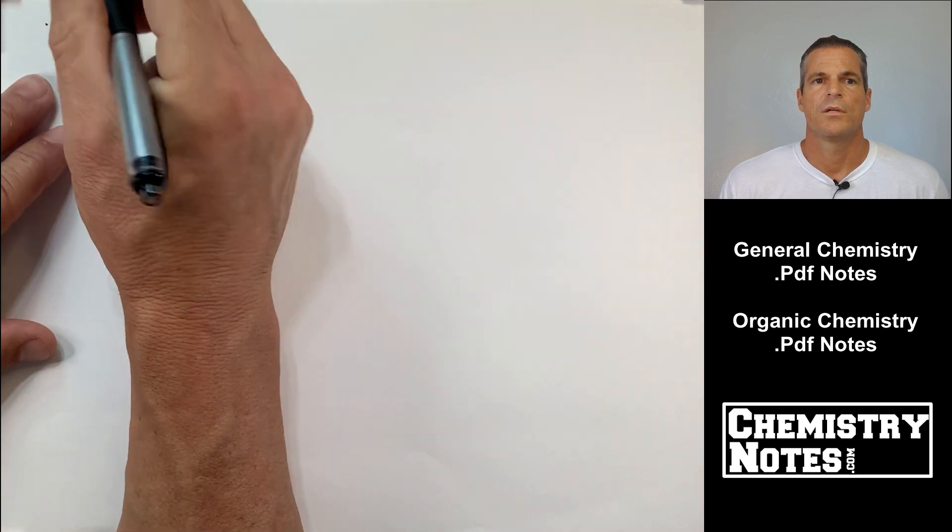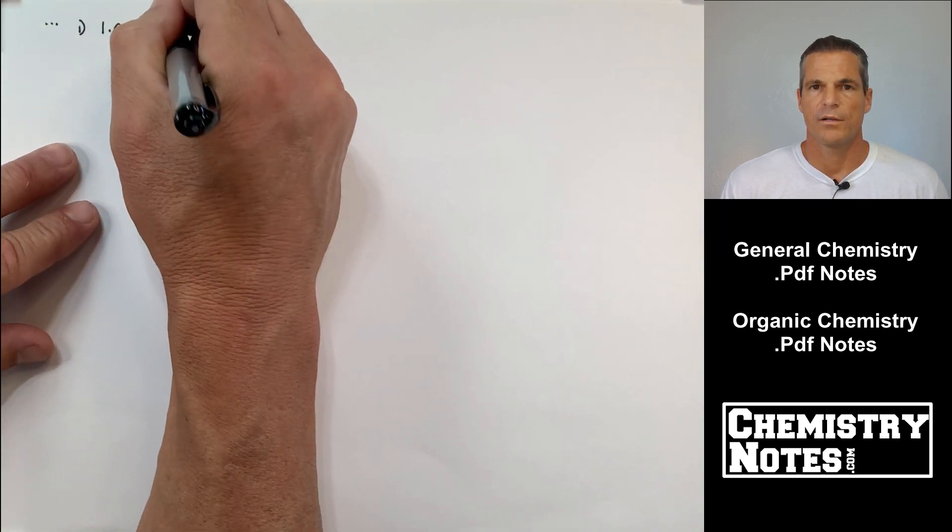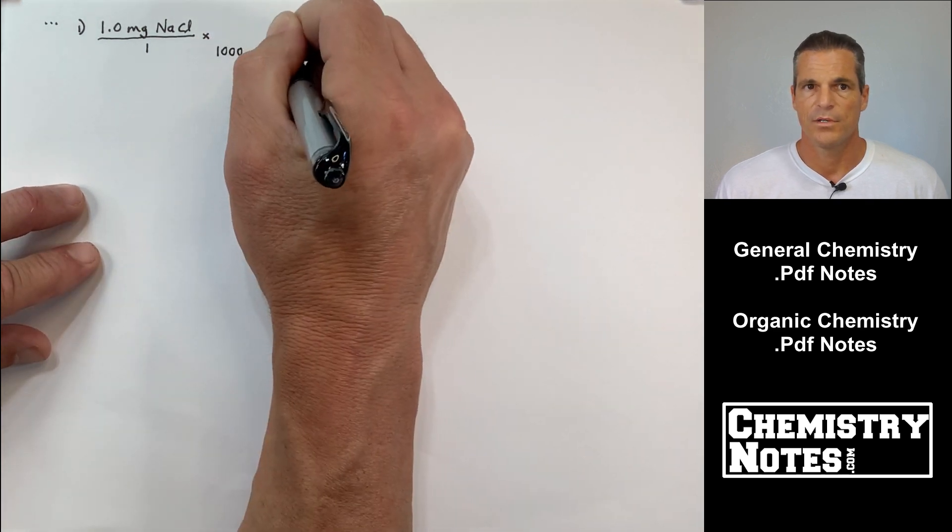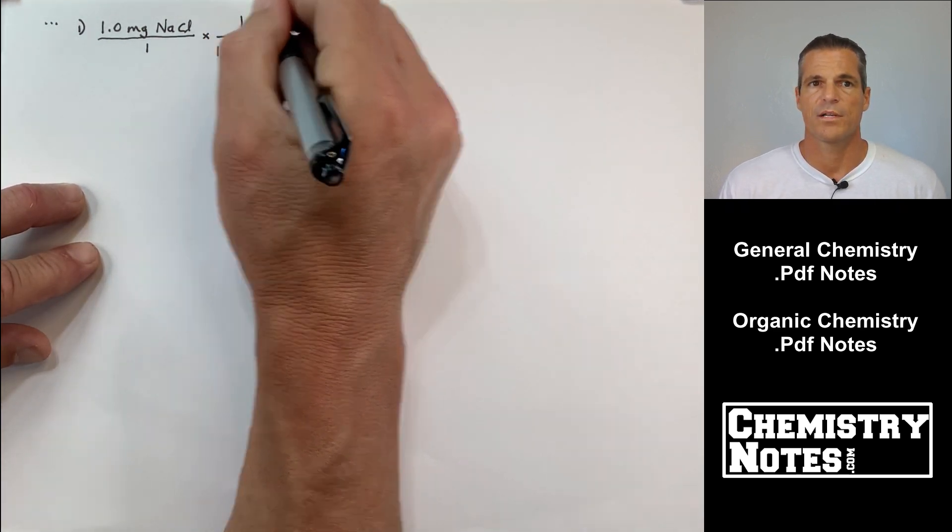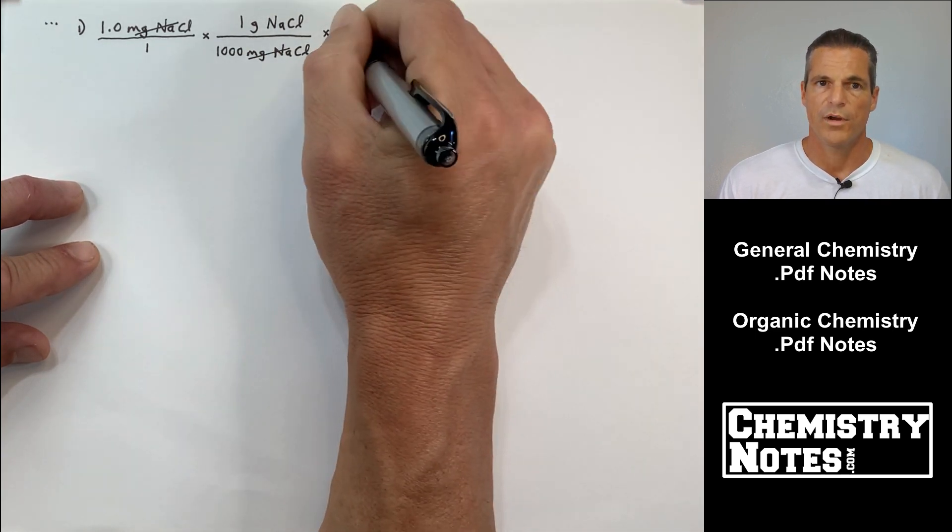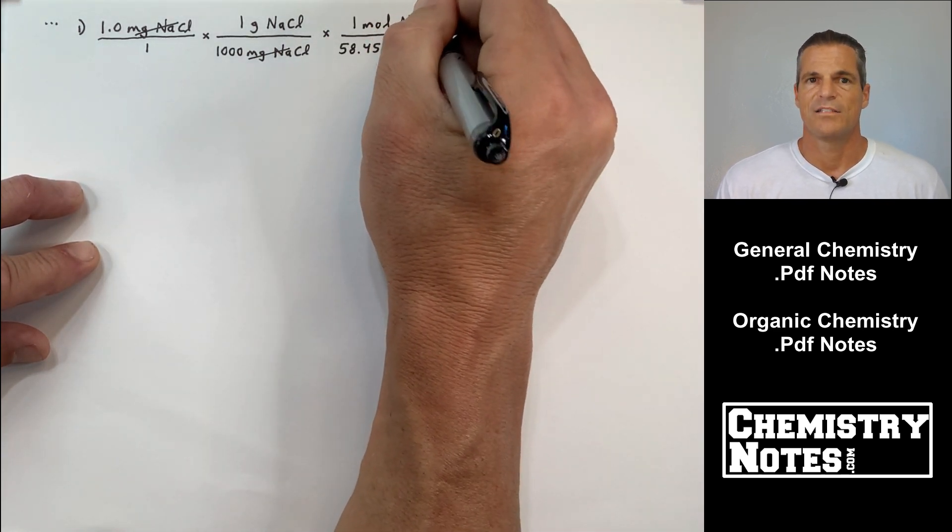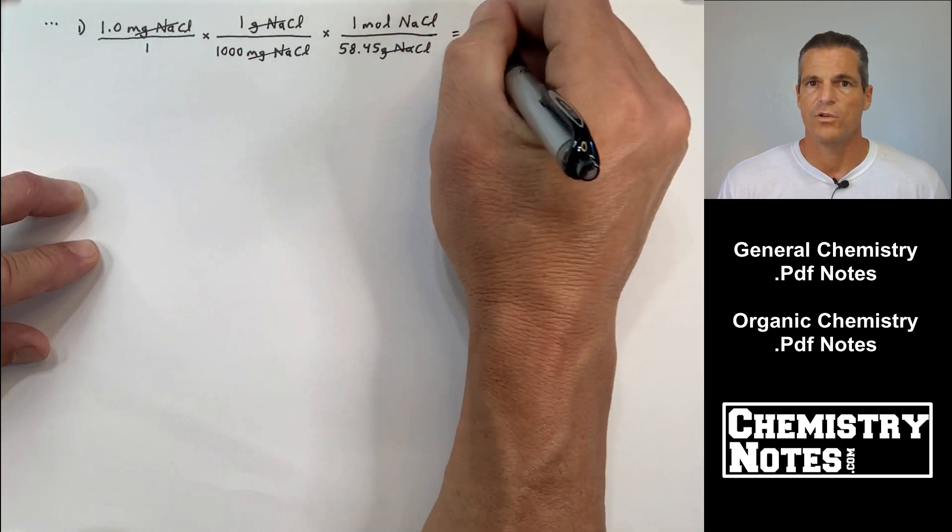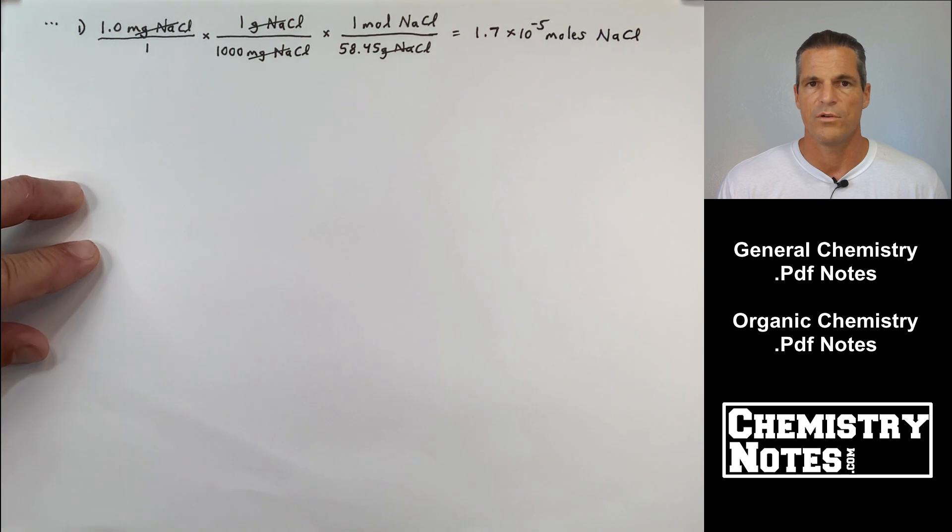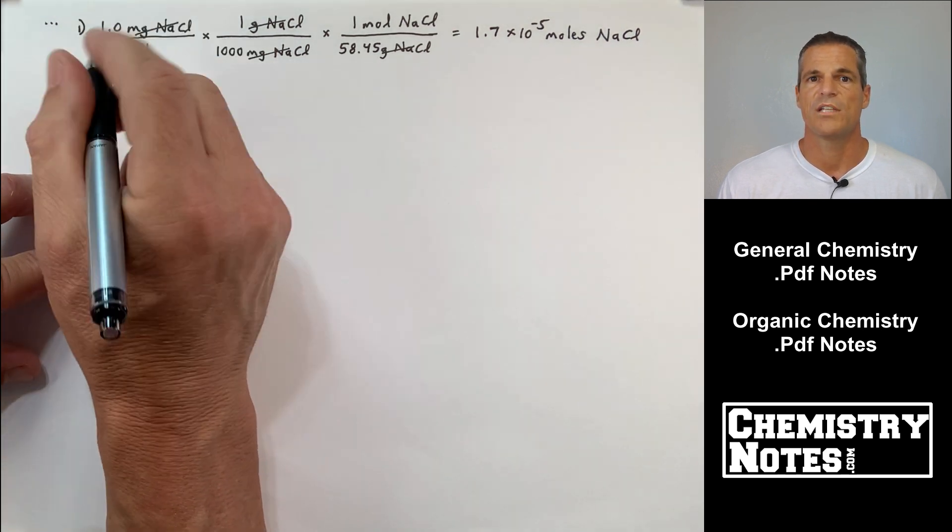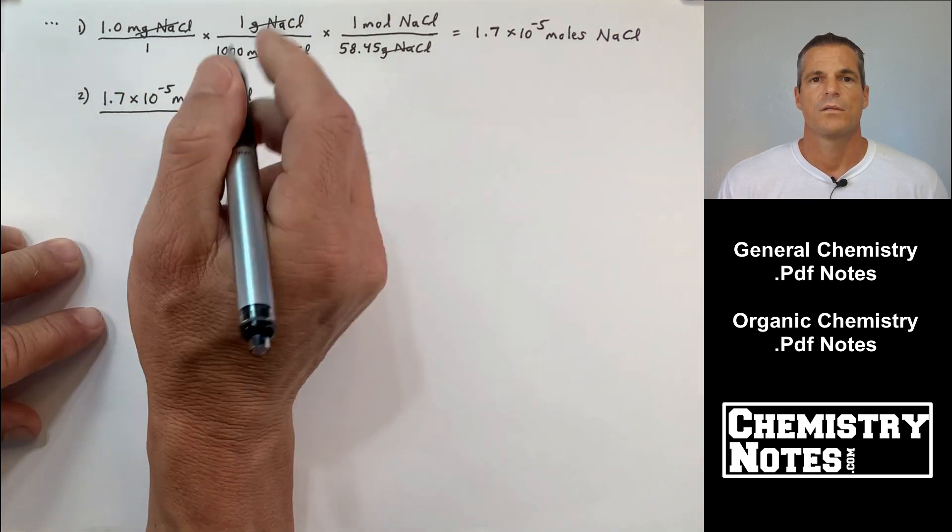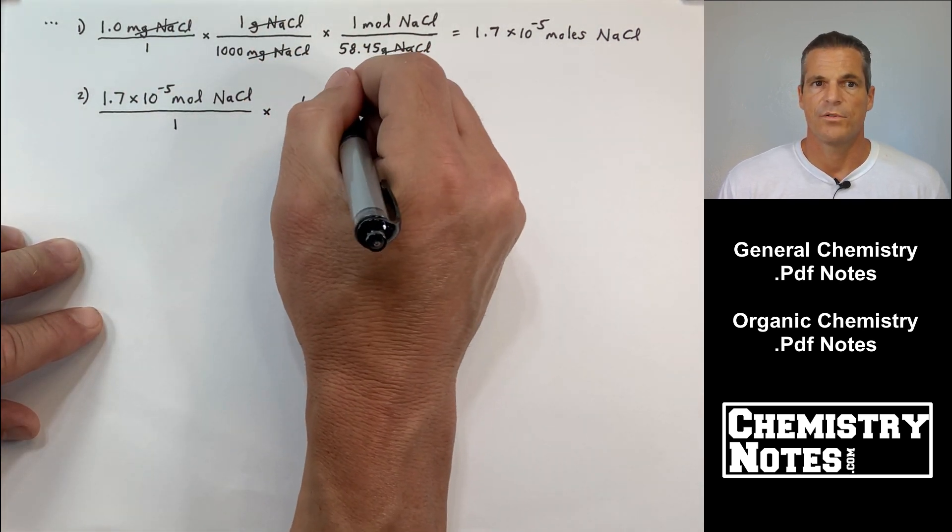First thing we're going to do, we got 1.0 milligrams of NaCl. I want to get that converted into moles. Usually that's a one-stepper, but because we're in milligrams, we have a thousand milligrams for every one gram of NaCl. I divide by the molar mass. Look at the units canceling. I carry everything from left to right with me. All of the units carry. I have 1.75 times 10 to the minus fifth moles NaCl.